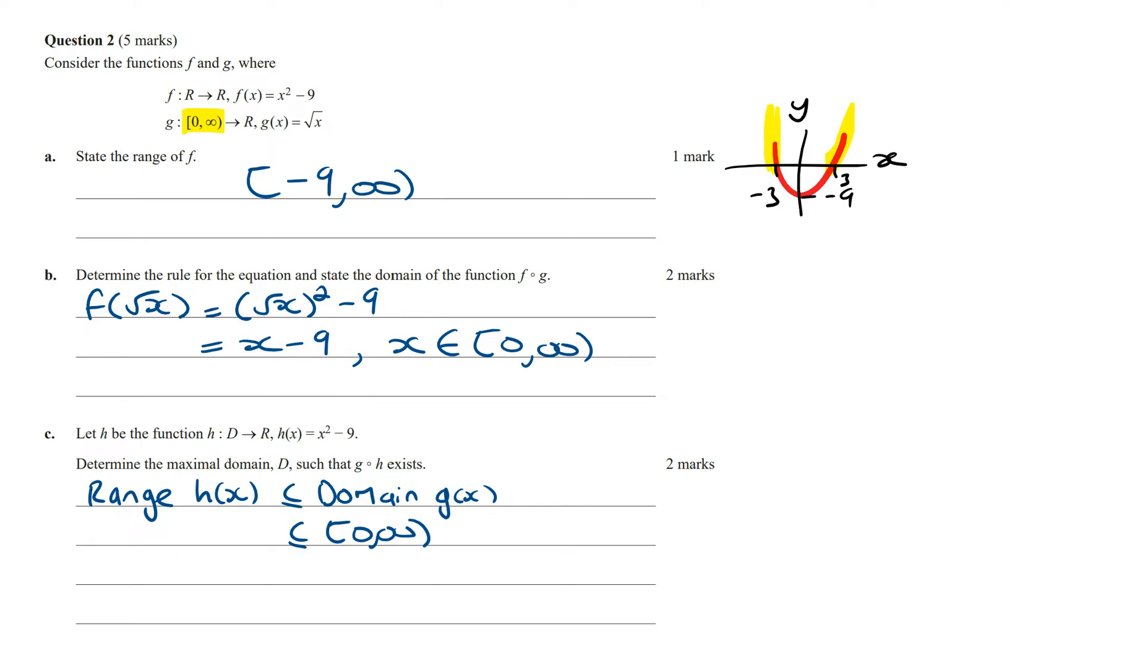And so this means that we need to restrict h of x to have the domain from minus infinity to minus 3 inclusive, or from 3 to infinity, where 3 is inclusive. And so with this restricted domain, g of h of x is going to exist.